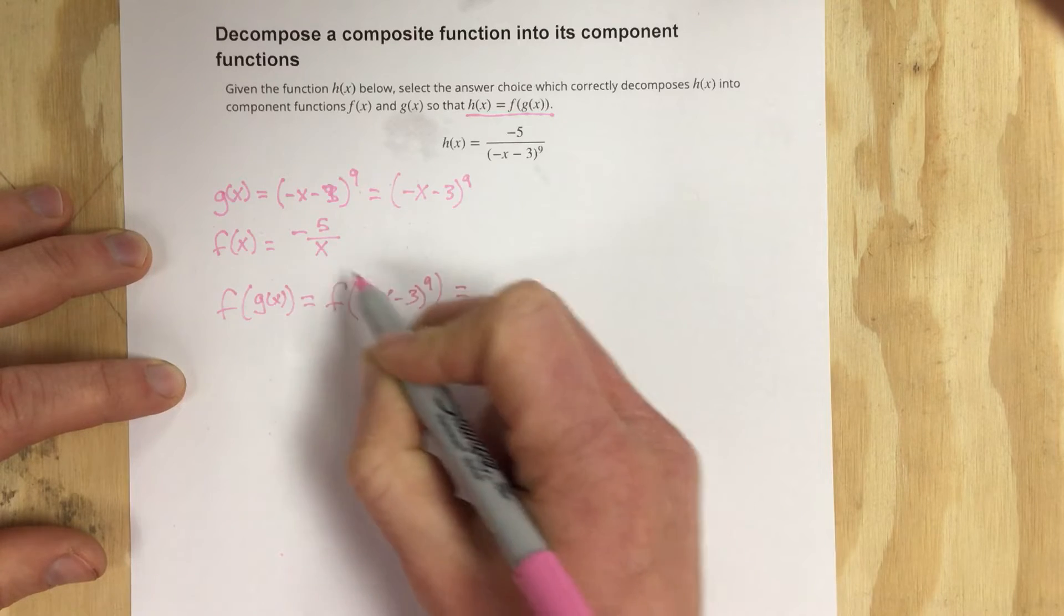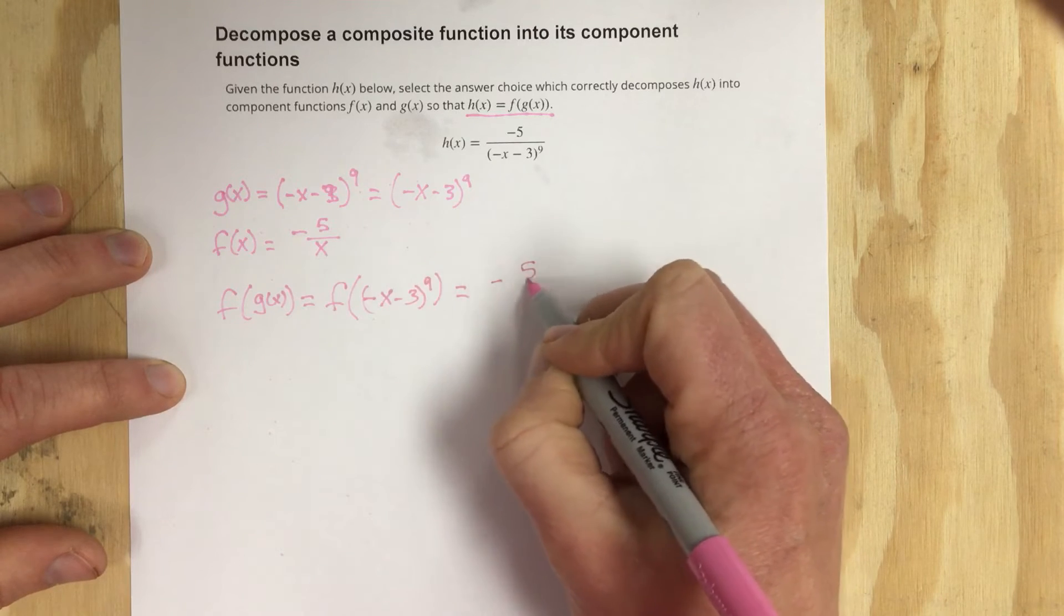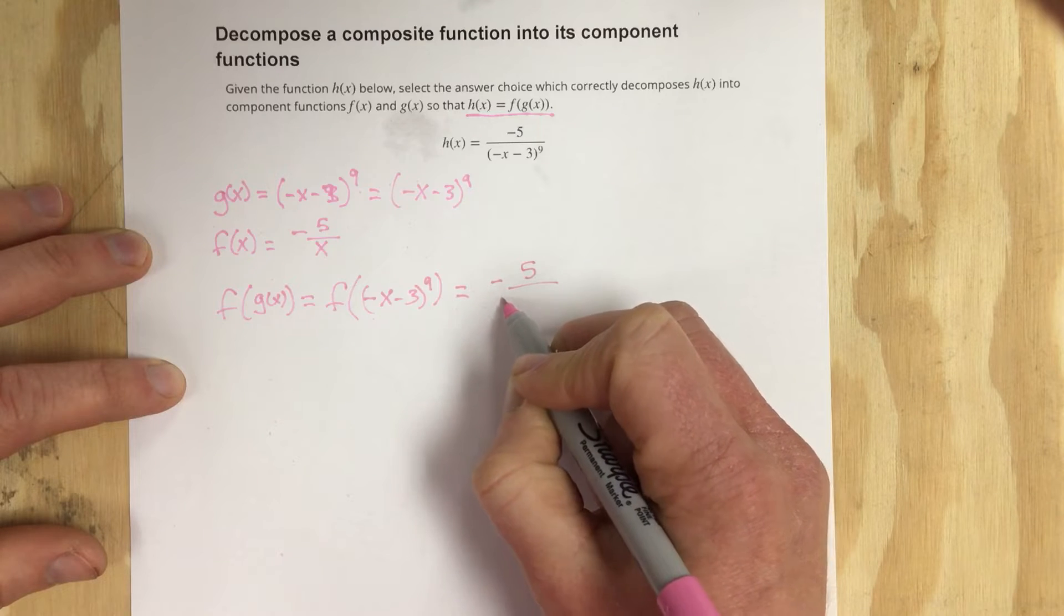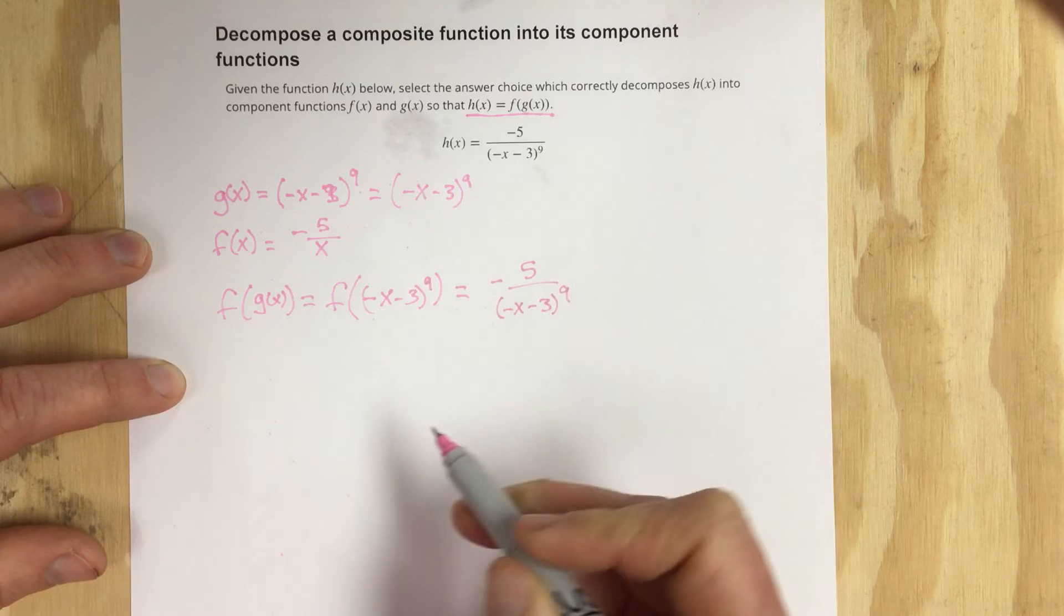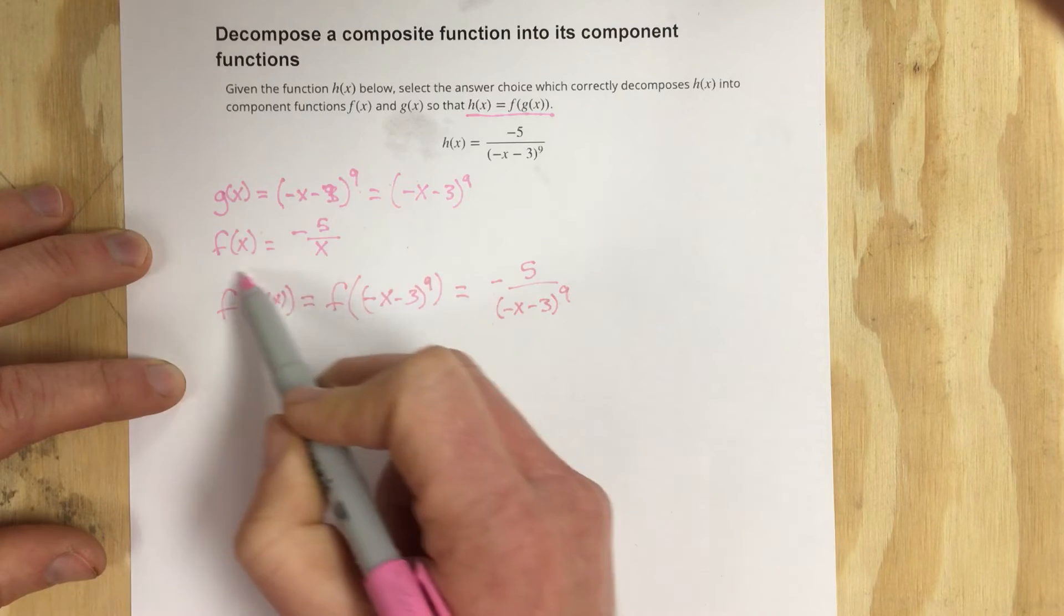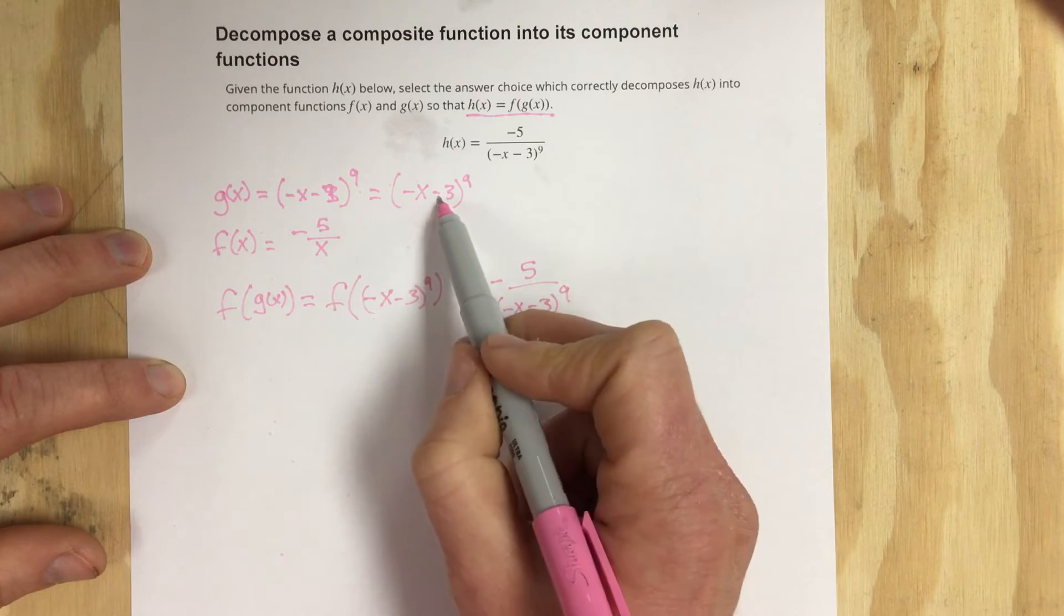I would plug that in for x here and I would get our h of x function that we had originally. So one option would be for g of x and f of x to be these two functions.